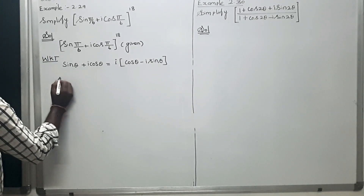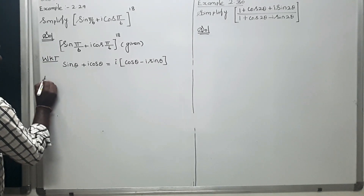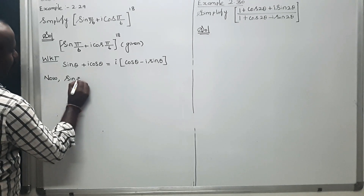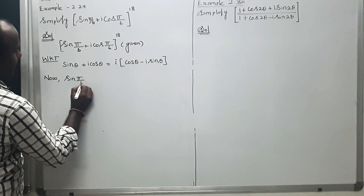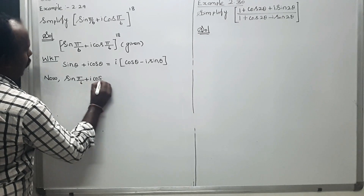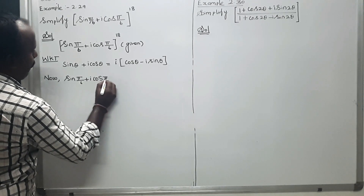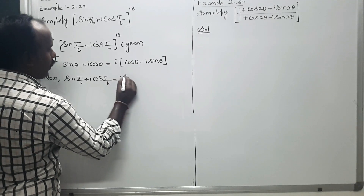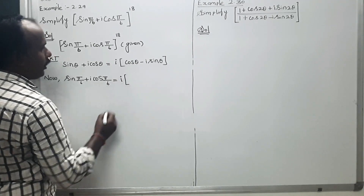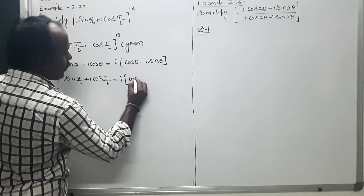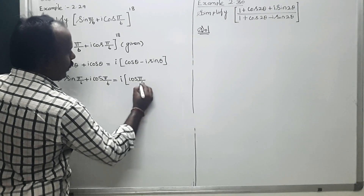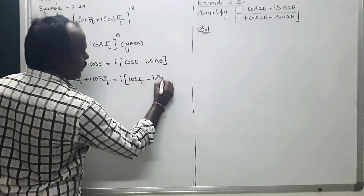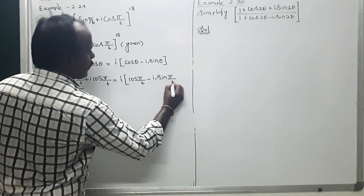Applying this to the given sum: sin π/6 + i cos π/6 is equal to i into (cos π/6 − i sin π/6).